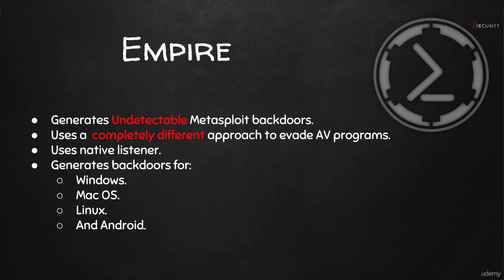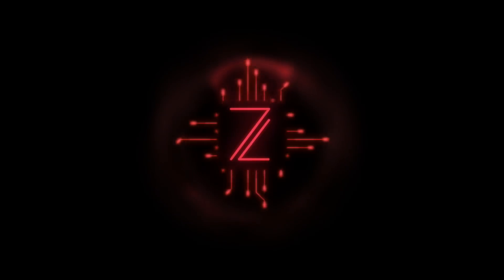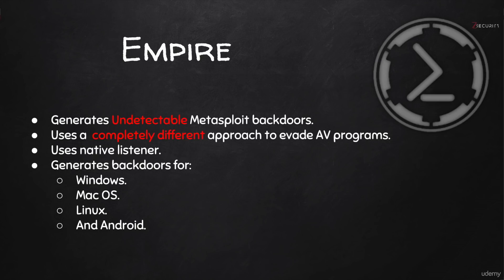Hello everyone, it's Zaid again from ZedSecurity.org. In this video I'm going to teach you how to use a tool called Empire to create a Windows backdoor that is not detectable by antivirus programs. Empire doesn't come pre-installed in Kali, so please check out the link in the description to see how to install Empire. Empire generates backdoors that work using PowerShell, a framework made by Microsoft that expands the basic command prompt and comes pre-installed from Windows 7 and up.